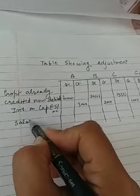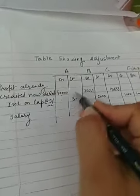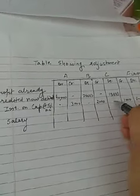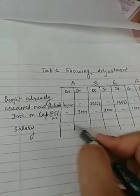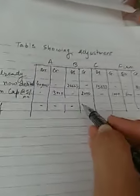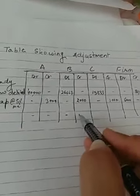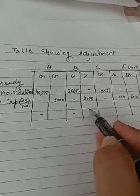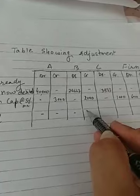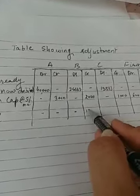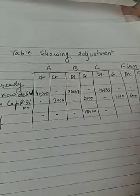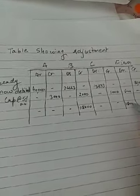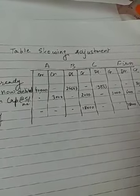Iske baad partner ko salary bhi deni hai. Salary sirf B ko milni hai, A ko nahi milni. Jahan khaali rehta hai wahan aap dash laga sakte hain so that aap confused na hon. Salary se bhi partner ka capital account increase hota hai, toh salary ko credit kar denge. 1,500 per month hai, toh 12 months ke liye 18,000 B ke credit mein. Firm ke account mein yeh 18,000 debit ho jaayega.